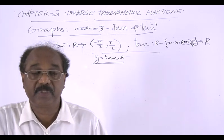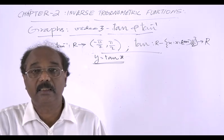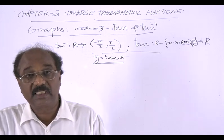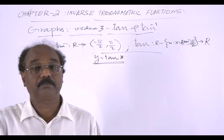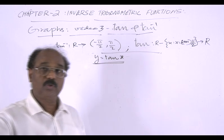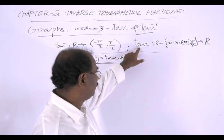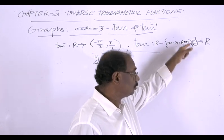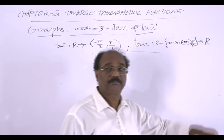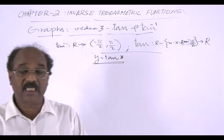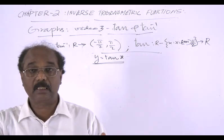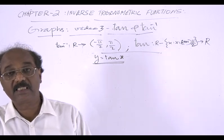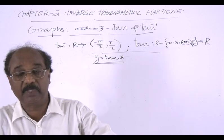The graph shows the functions tan and tan inverse. First we consider the tan function. The tan function is defined from ℝ minus the set of all x where x equals (2n+1)·π/2, into ℝ. So the domain excludes points where x equals (2n+1)·π/2.